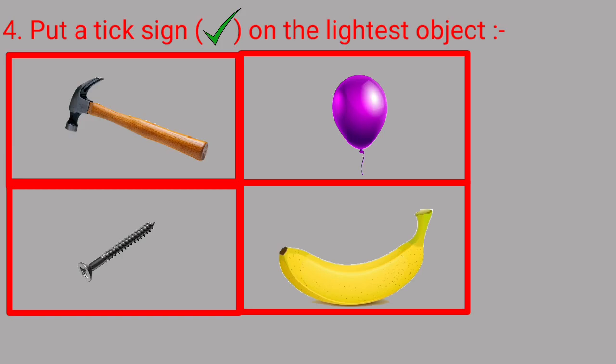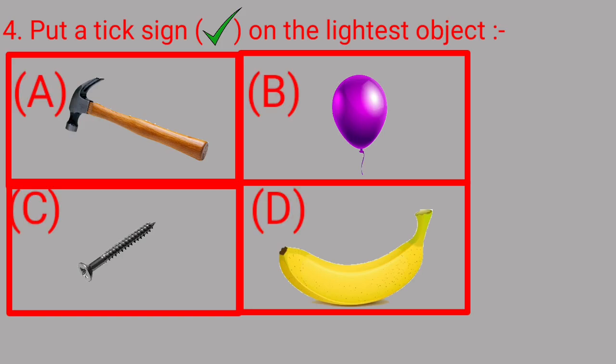Our next question is: put a tick sign on the lightest object. Here option A is a hammer, option B is a balloon, option C is a nail, and option D is a banana.